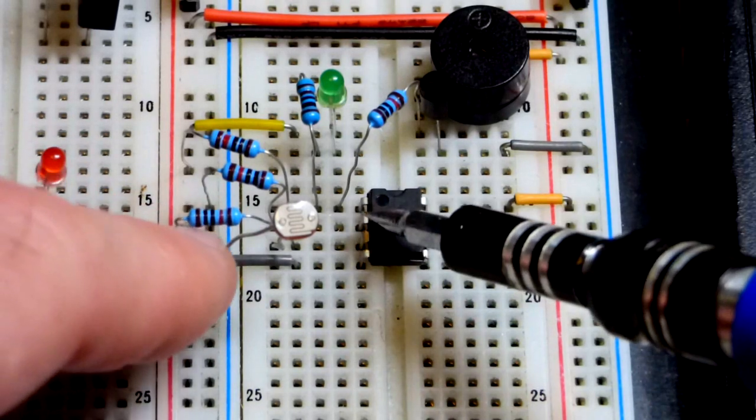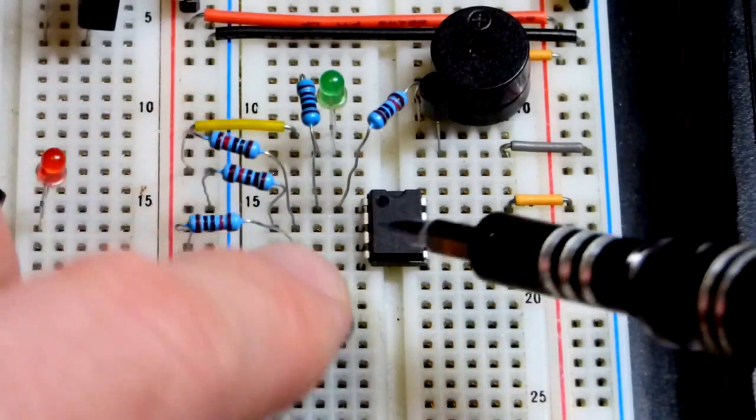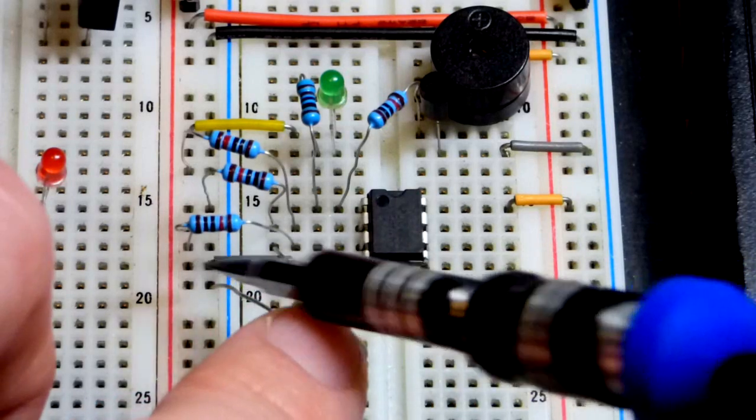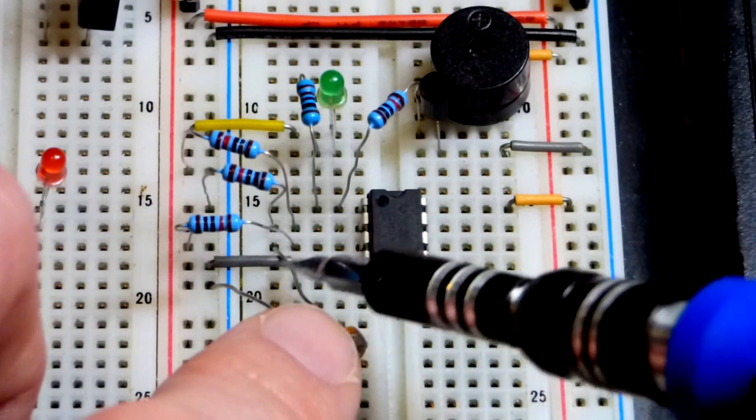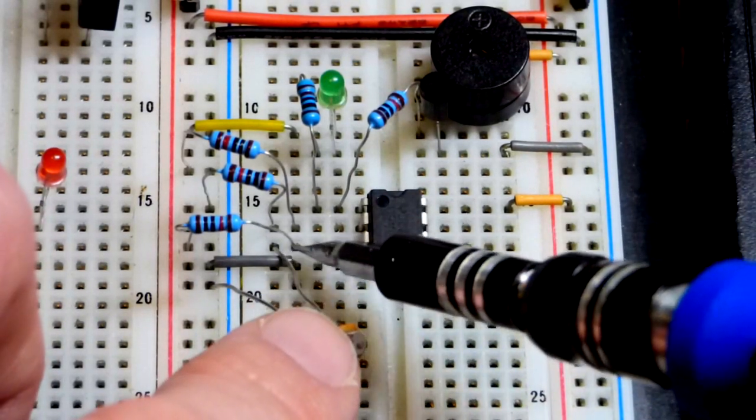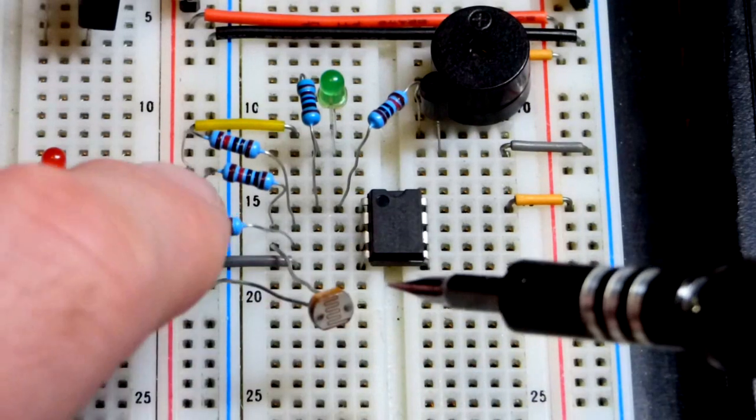So we got output, inverting input, non-inverting input, light dependent resistor to the negative side of the non-inverting input. Yeah, the non-inverting input and then a 10 kilo ohm resistor right there. That's the voltage that changes.